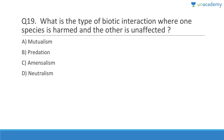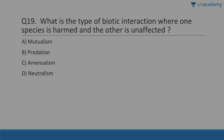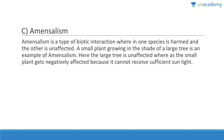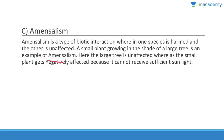Question 19: The type of biotic interaction where one species is harmed and the other is unaffected is called amensalism. It especially occurs in some plants that secrete certain chemicals — this is called allelopathy. Amensalism is a type of biotic interaction wherein one species is harmed and the other is unaffected. A small plant growing in the shade of a large tree is an example — the small plant is negatively affected because it cannot receive sufficient sunlight.